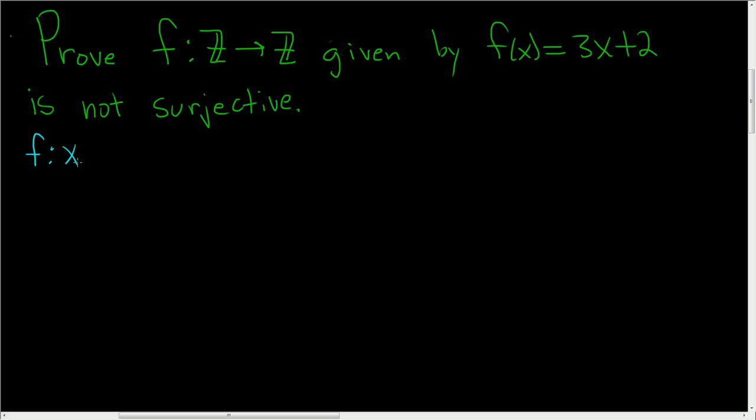f from X to Y is surjective if for all y values in the codomain Y, we can find some x value in the domain X such that f takes x and sends it to y. That's what it means for a function to be surjective.